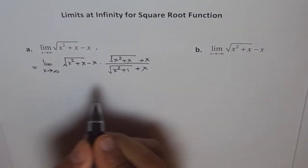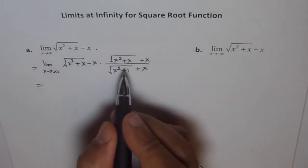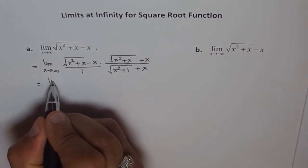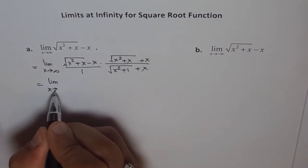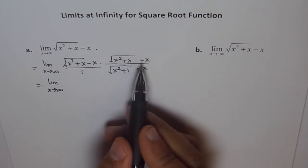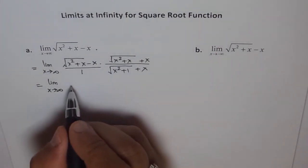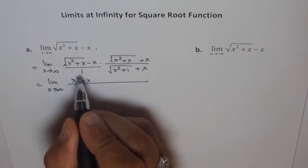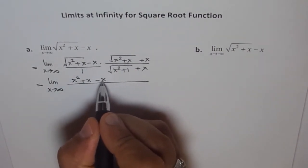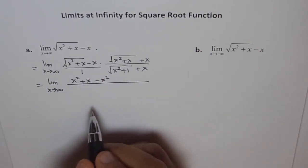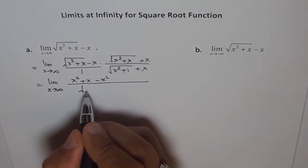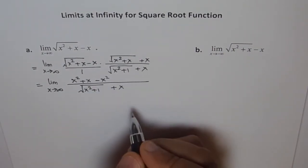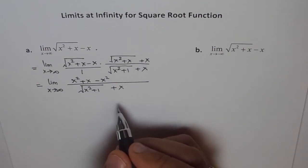This expression equals: limit x approaches infinity, and this will work out as a difference of squares, a² minus b². So what you get in the numerator is a² minus b², which is (x² + x) minus x². That's what you get in the numerator. The denominator is one times the conjugate: sqrt(x² + x) plus x.